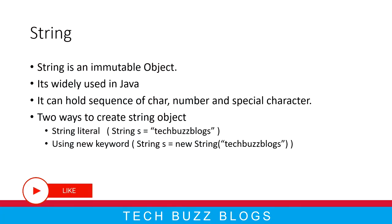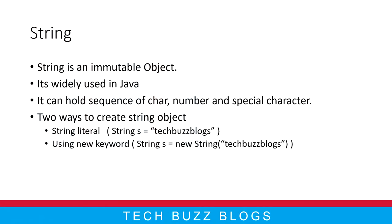Now coming to the first point — String is immutable. When is it immutable? When we are using the String literal. If you are using the new keyword, then it is not immutable. So now let me jump into in-depth why we are calling it immutable.